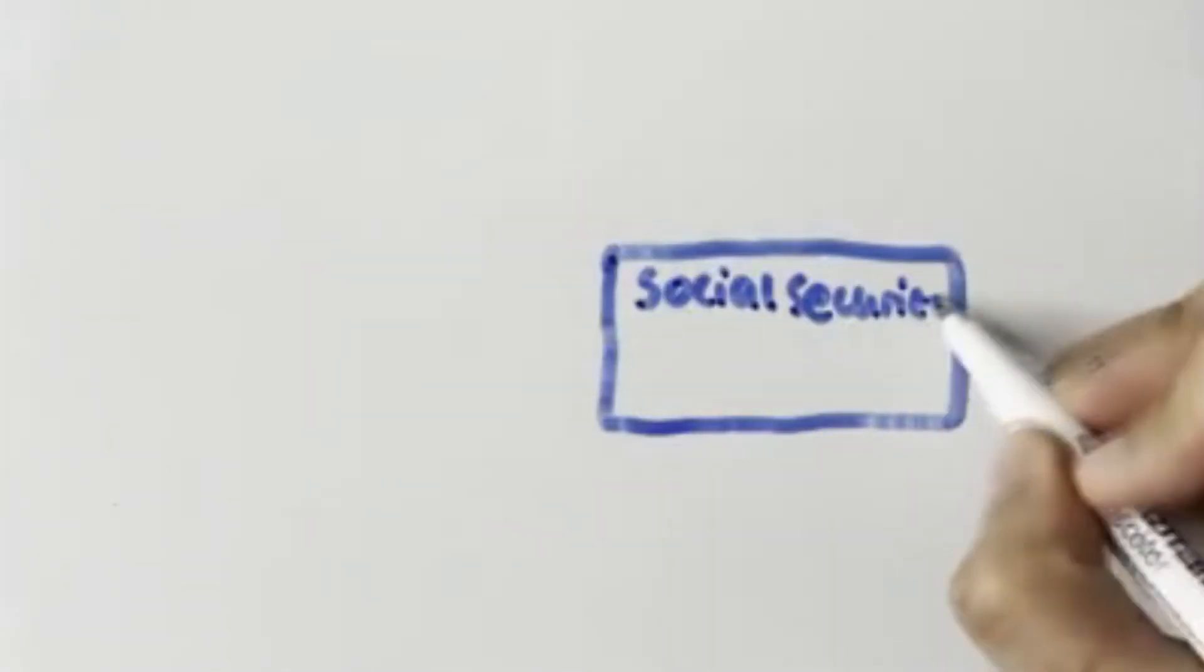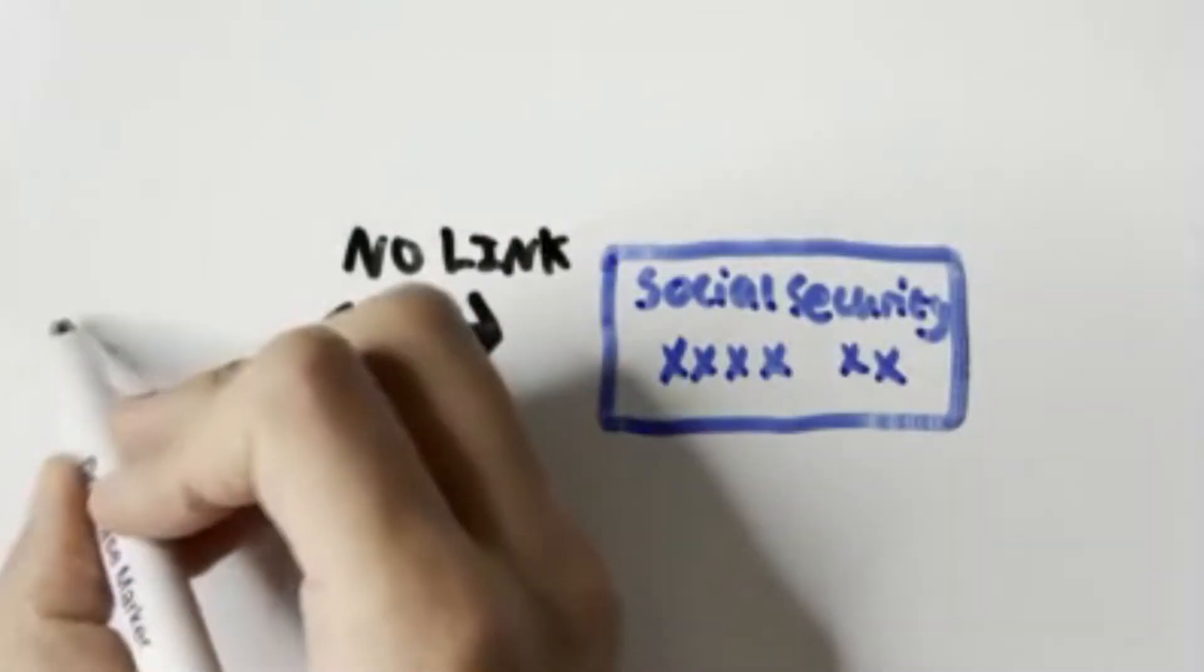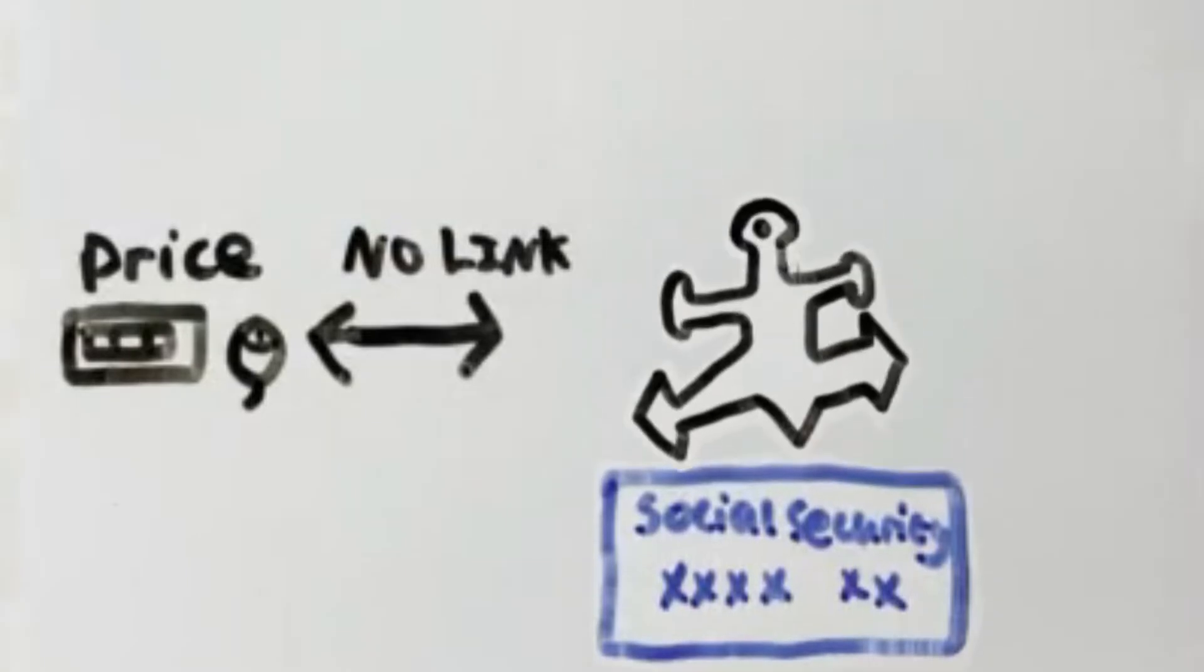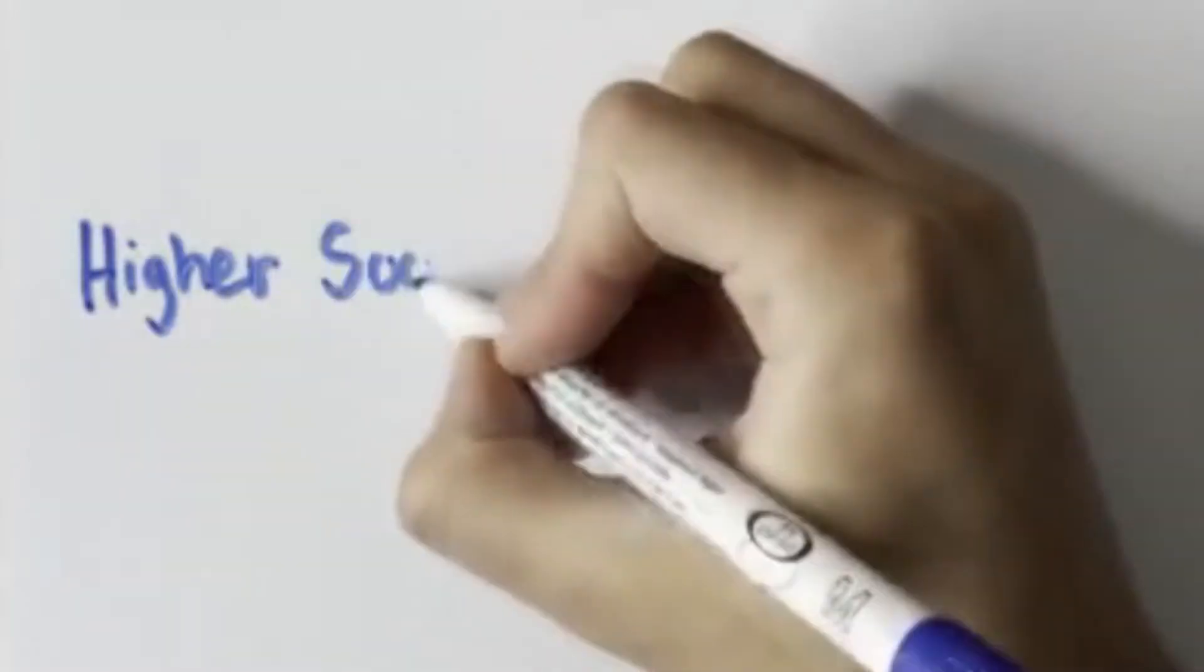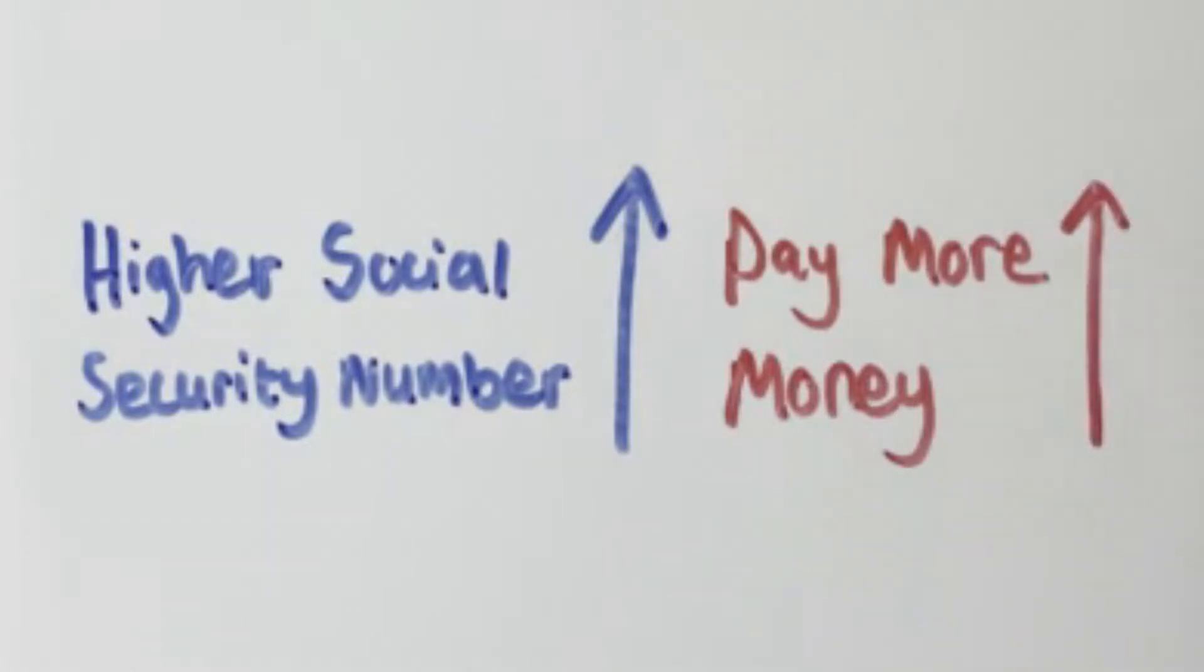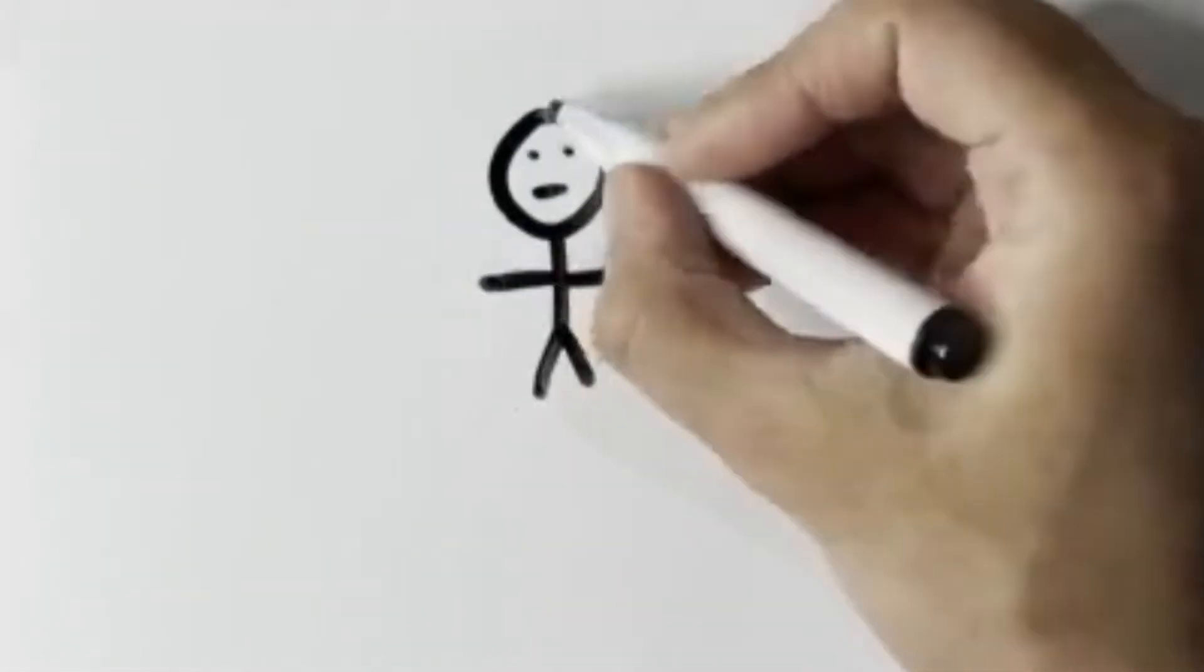This made no logical sense because someone's social security number has nothing to do with the price of a product. But because it was the first piece of information they wrote down, they became anchored to it, such that people with higher social security numbers were willing to pay more money for a product than people with lower ones. This also works when the anchor is given to someone indirectly.